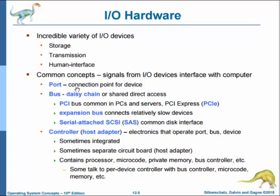The device communicates with the machine via a connection point called a port — for example, a serial port. A bus, like the PCI bus used in most computers today, is a set of wires defined by protocol standards that specify a set of messages conveyed by patterns of electrical voltages applied to the wires with defined timings. When device A has a cable that plugs into device B, and device B plugs into device C, and device C plugs into a port on the computer, that arrangement is called a daisy chain, which usually operates as a bus.